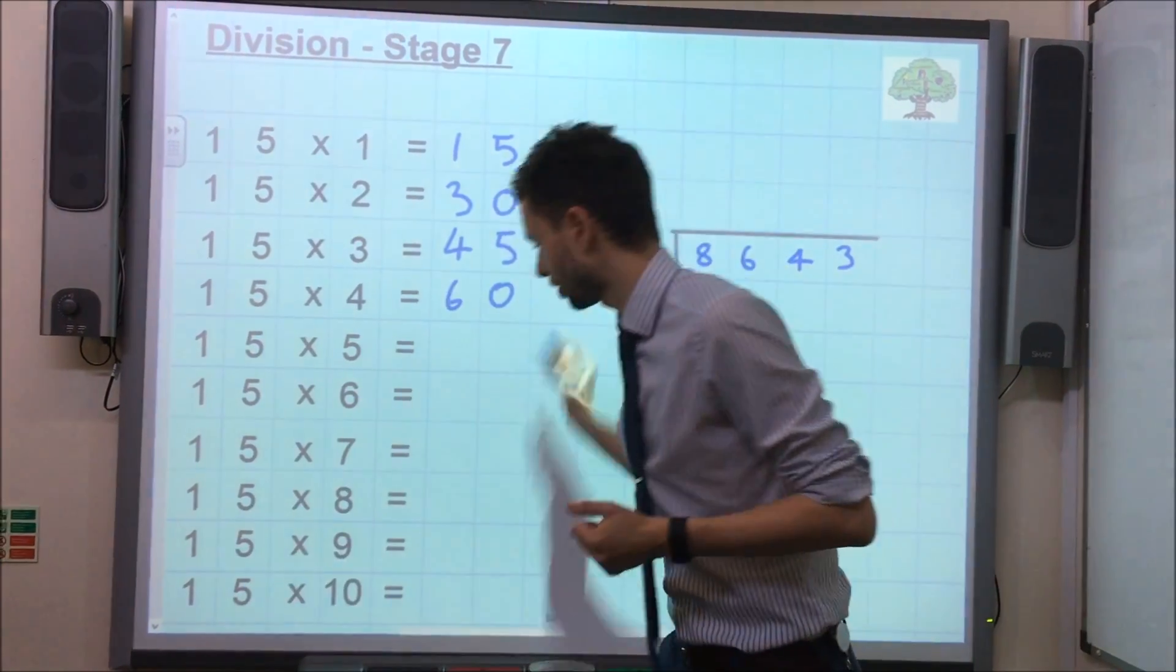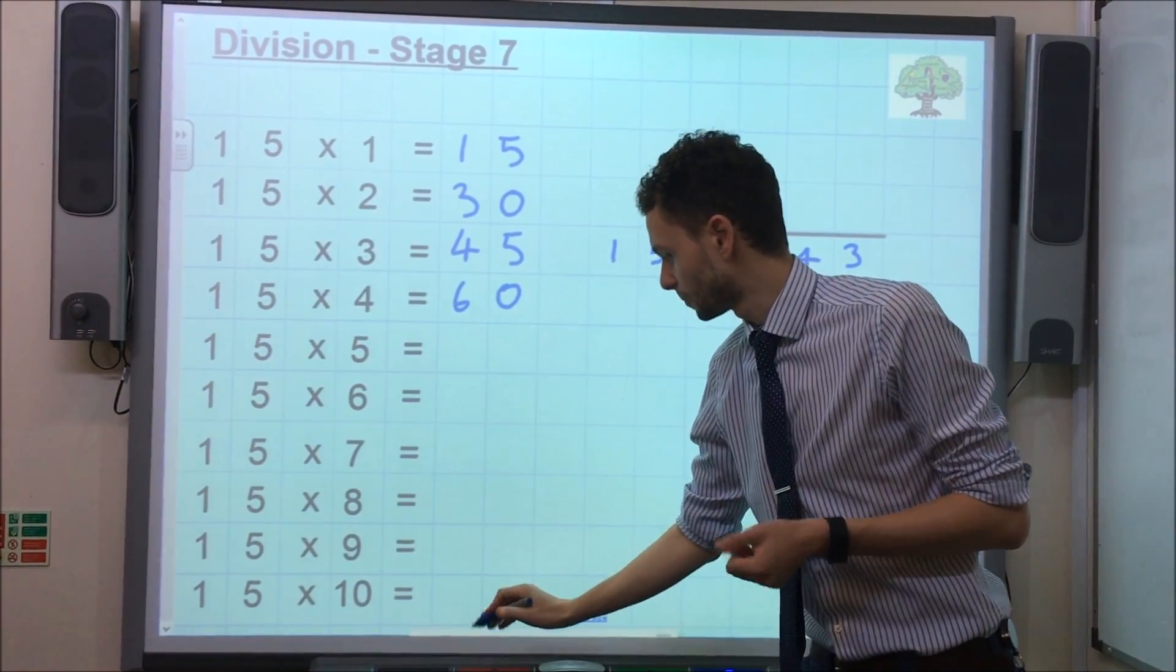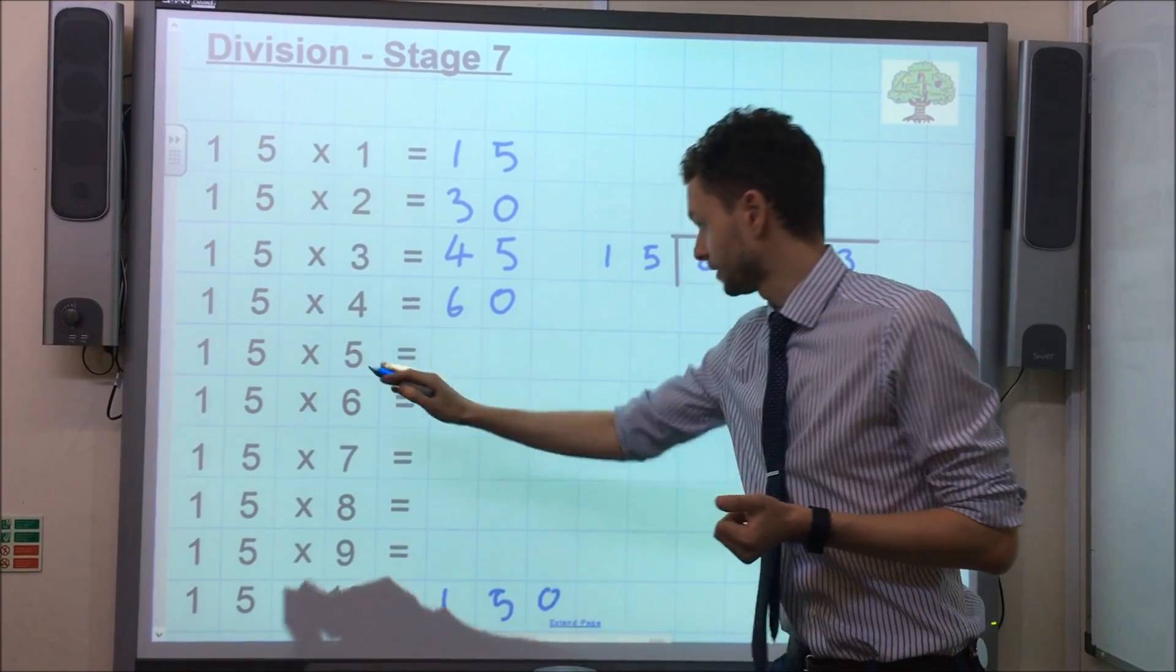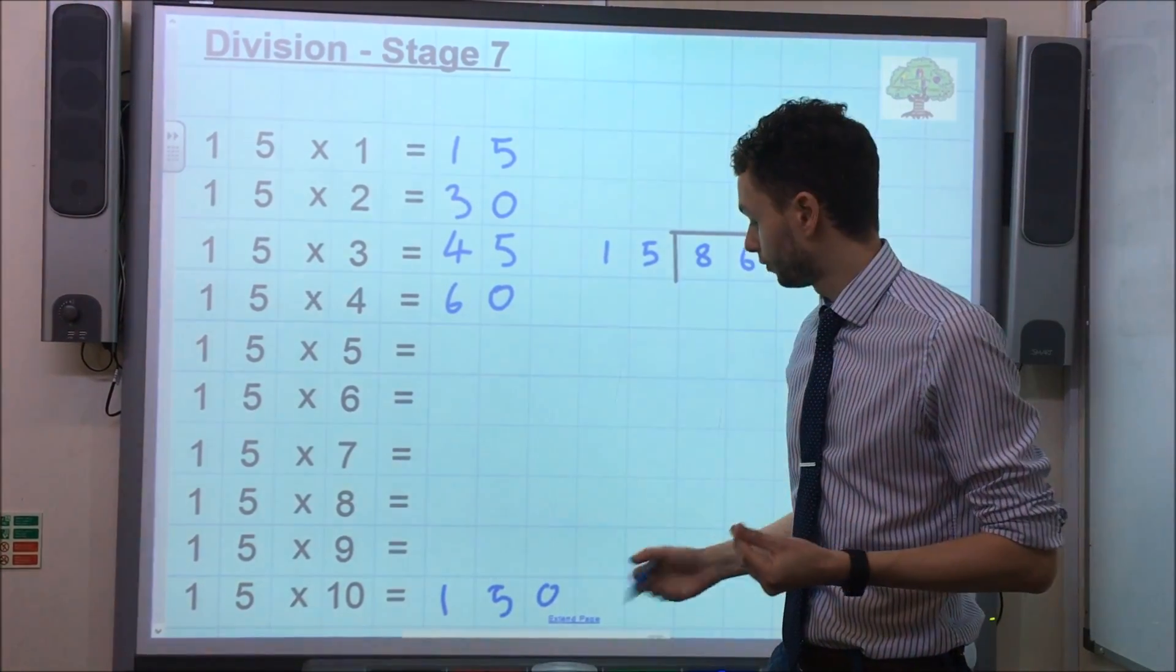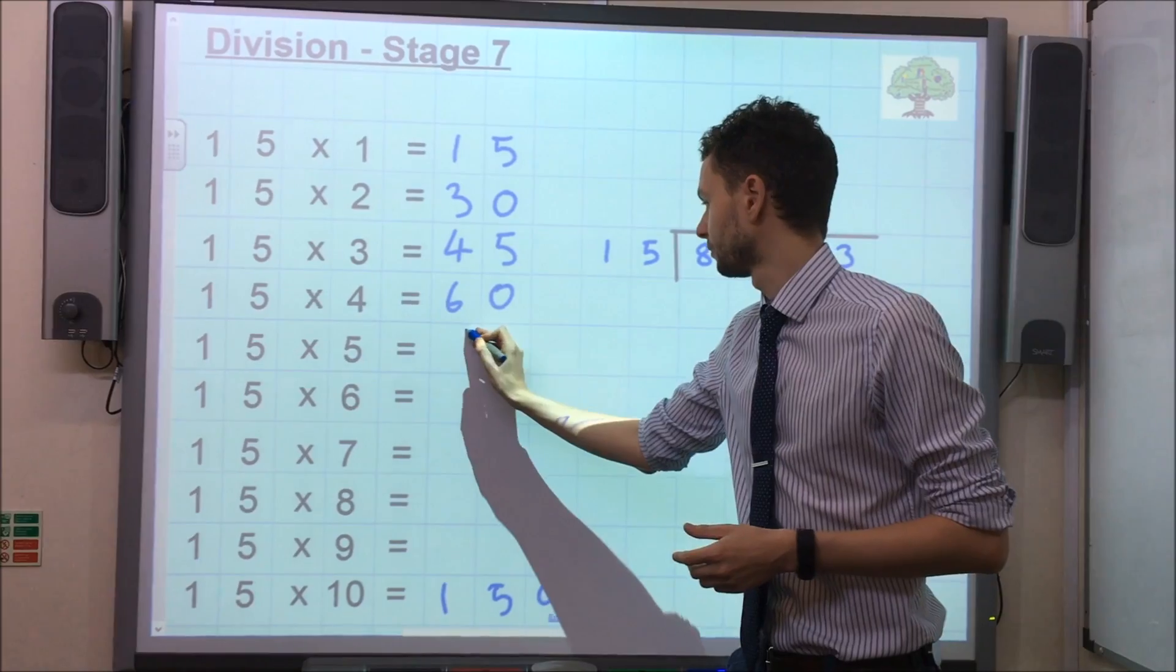Let's leave 5 and instead let's go straight to 10. 15 times by 10 is 150. 15 times by 5 is just going to be half of that, so half of 150 is 75.